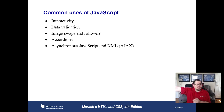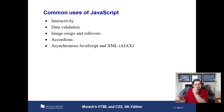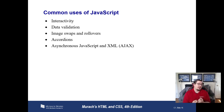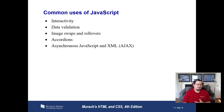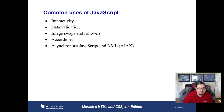AJAX allows us to update parts of the website by getting data from the server — most often from the application server side. It dynamically updates the web page using JavaScript instead of doing a full page refresh, which means it's a lot more snappy and feels a lot quicker. It allows us to do a lot more cool interactive things that we wouldn't be able to do without AJAX.